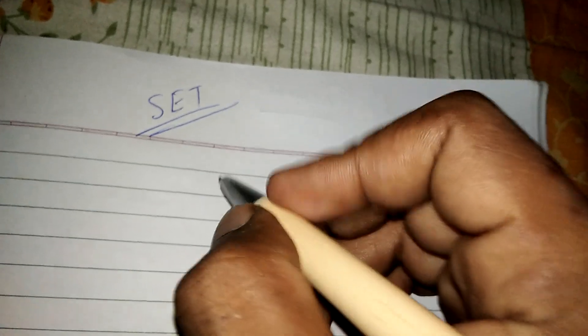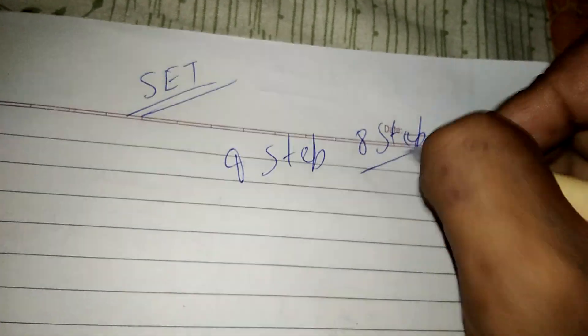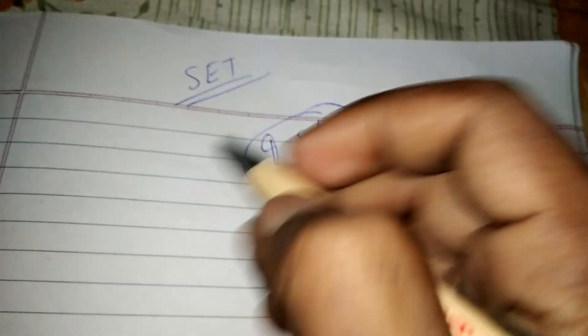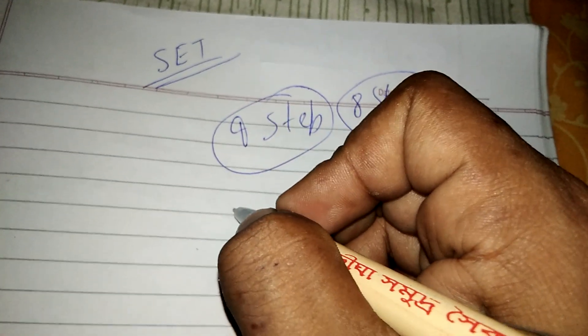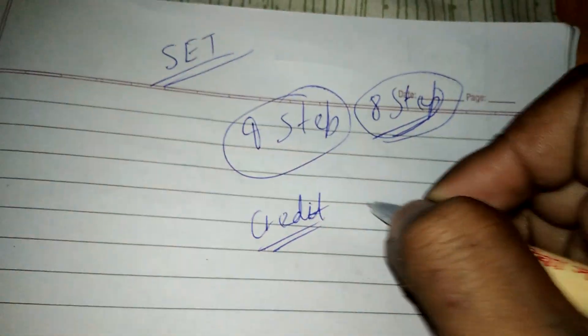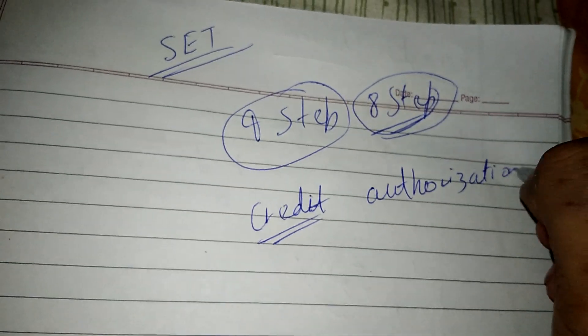Let's start. It is like a nine step procedure, or eight step - it depends. Some books define it as eight and some as nine. But the main reason for Secure Electronic Transaction is to protect credit card security and provide authorization.